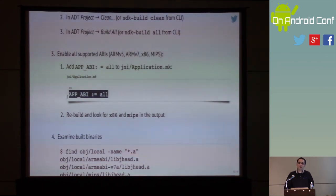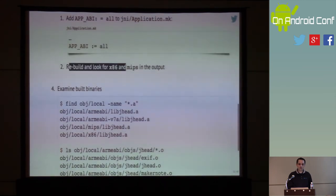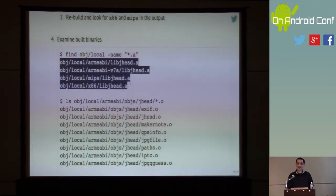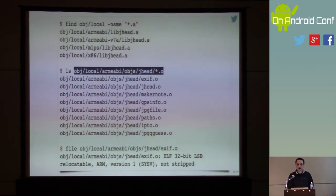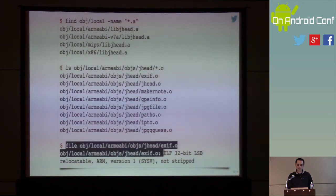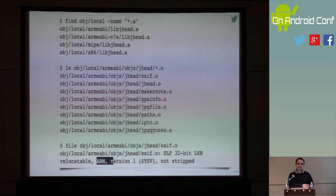If we now rebuild everything, we'll see that libjhead will have been compiled four different times. If you look inside, say, ARMv5, you'll see that individual files have been compiled into their own object files. If you run 'file' on one of these, you'll see it's a 32-bit ARM shared library. Of course, this is not the final thing we'll actually end up using, but it gives you an idea of how this works.